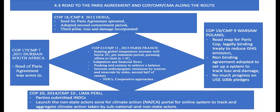At COP19 in Warsaw, the conference mapped the road for the Paris Agreement, which is basically a legally binding treaty to reduce greenhouse emissions. At the same time, the conference in Warsaw adopted a system to address loss and damage, but the adopted system was not binding. Progress was also made on the US$100 billion pledge by developed countries.